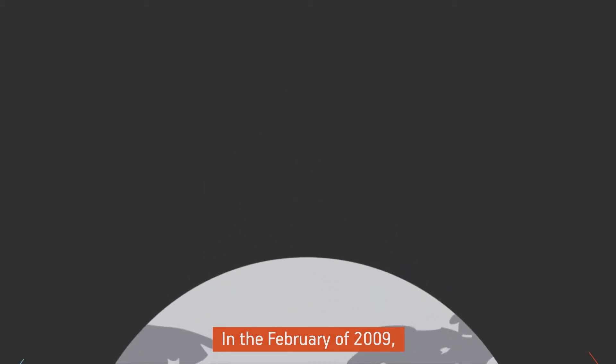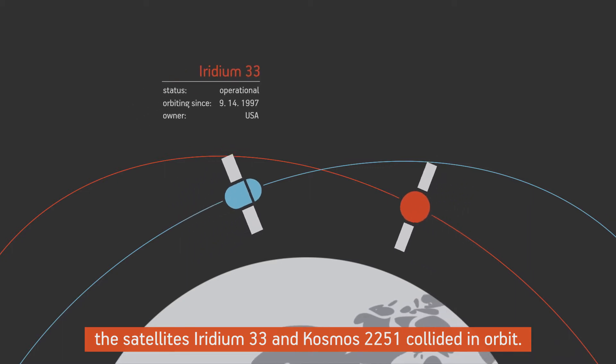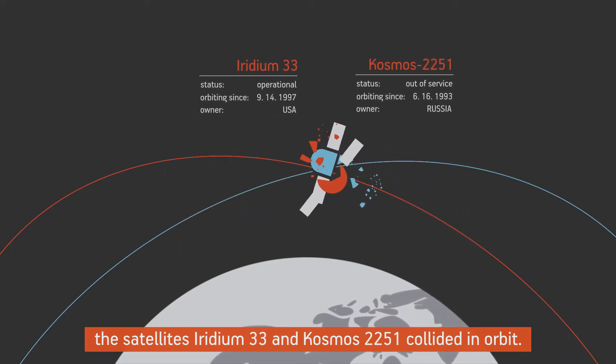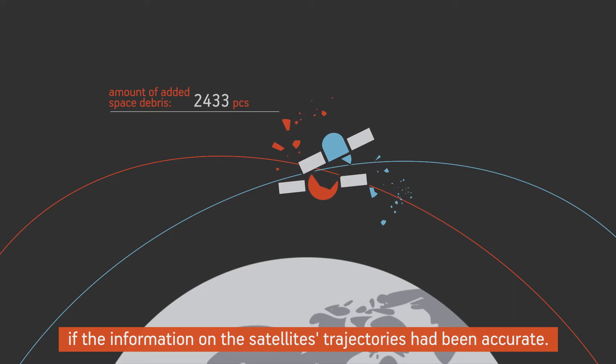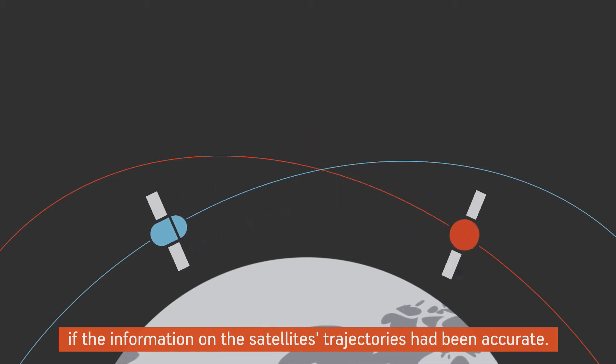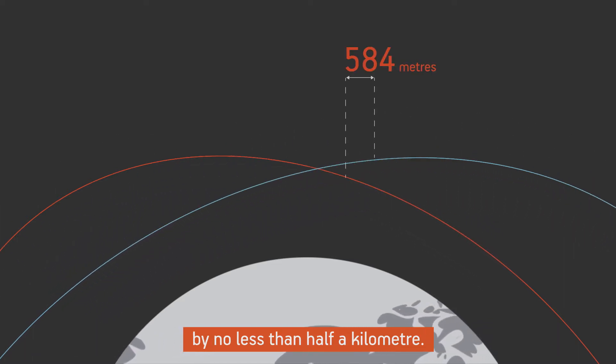In February 2009, the satellites Iridium-33 and Cosmos-2251 collided in orbit. This collision could have been avoided if the information on the satellite's trajectories had been accurate. Based on public data, the satellites were supposed to pass by each other by no less than half a kilometer.